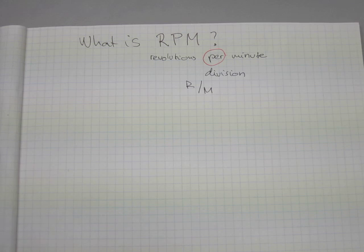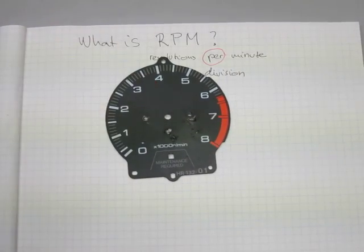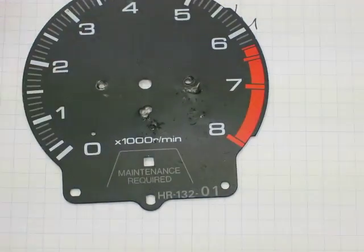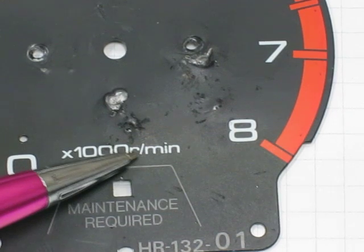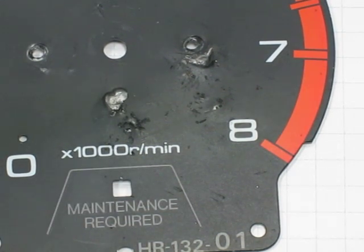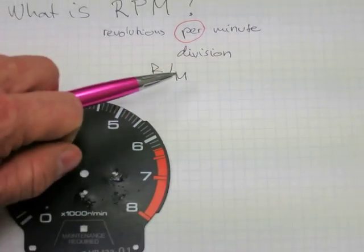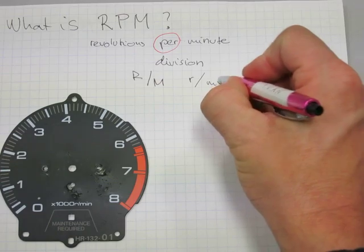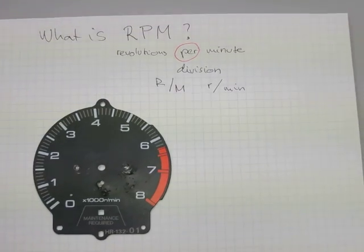That's why RPM is sometimes written differently — maybe not in English, but in some European languages. On this gauge here it says 'r divided by minute.' So whether it's lowercase r divided by m, or r divided by minute — either way, revolutions per minute.